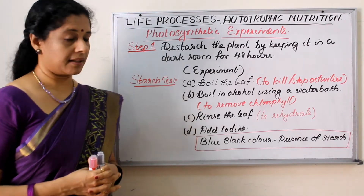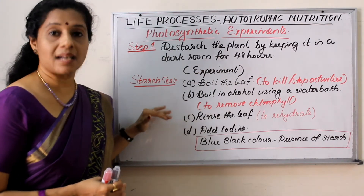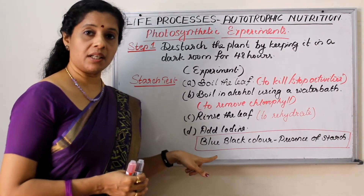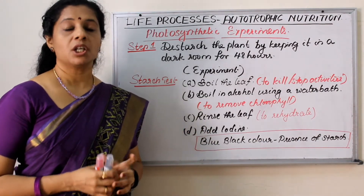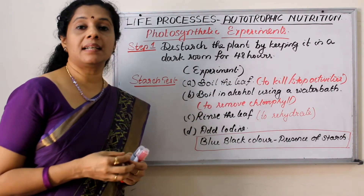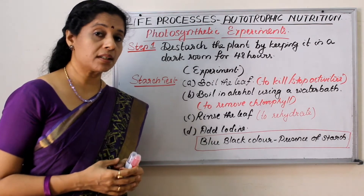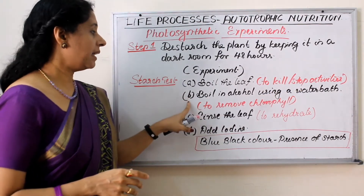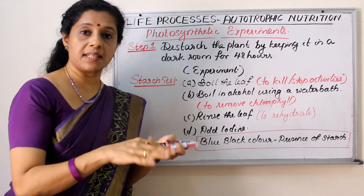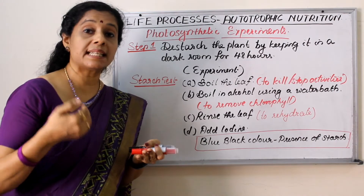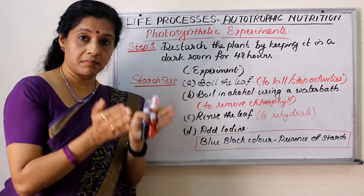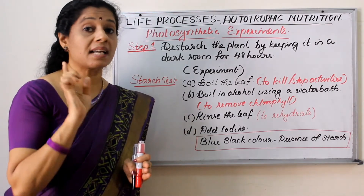Now let us see how the starch test is done — the final stage after whatever experiment. We know we can test the presence of starch by using iodine, which gives a blue-black color in the presence of starch. Take the experimental leaf plucked from the plant after the experiment and boil it in water. After that, boil it in alcohol using a water bath — indirect boiling — because alcohol is highly inflammable.